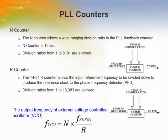The ADF4002 has a 13-bit N counter and a 14-bit R counter. The N counter allows division ratios from 1 to 8192 in the Phase Lock Loop feedback counter. The 14-bit R counter allows the input reference frequency to be divided down to produce the reference clock to the Phase Frequency Detector, with division ratios of 1 to 16,383. The N counter makes it possible to generate output frequencies spaced only by the reference frequency divided by R.